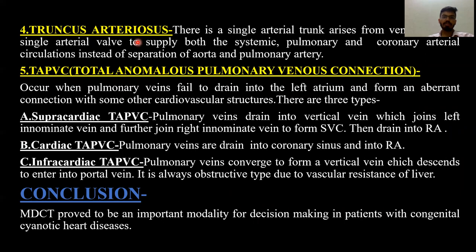Truncus arteriosus is a condition in which a single arterial trunk arises from the ventricles, through which a single arterial valve supplies the systemic, pulmonary, and coronary arterial circulation, instead of the normal separation into aorta and pulmonary artery. TAPVC — total anomalous pulmonary venous connection — occurs when the pulmonary veins fail to drain into the left atrium normally and form an aberrant connection with some other cardiovascular structure.